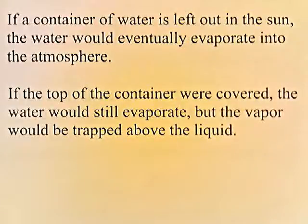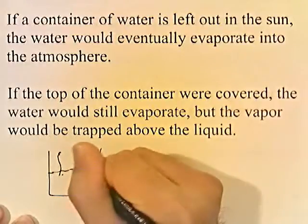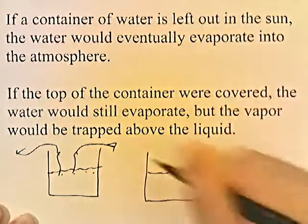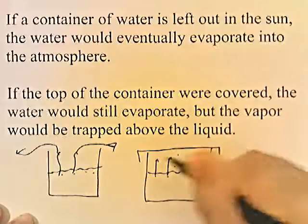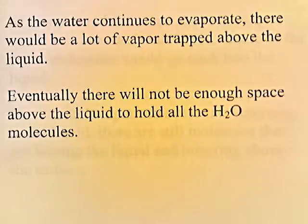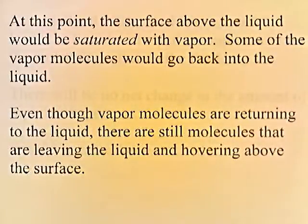If a container of water is left out in the sun, the water would eventually evaporate into the atmosphere. If the top of the container were covered, the water would still evaporate but the vapor would be trapped above the liquid. As water continues to evaporate, there would be a lot of vapor trapped, and eventually there wouldn't be enough space to hold all the H₂O molecules. At this point, the surface above the liquid would be saturated with vapor, and some vapor molecules would return to the liquid — even as other molecules continue to leave.